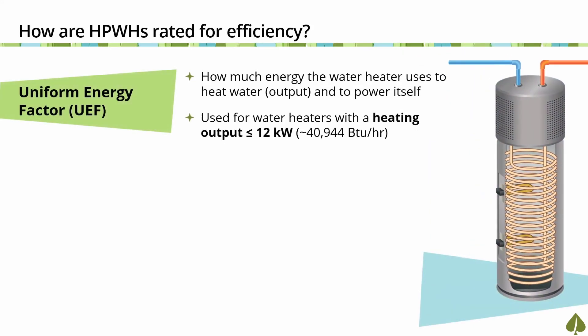There are two primary metrics for determining the energy efficiency of a heat pump water heater. The first metric is Uniform Energy Factor, or UEF. UEF is a measure of a water heater's energy efficiency and indicates how much energy the water heater uses to heat water, which is called the electrical output, and the energy to power itself. UEF is the metric used for water heaters with a heating output less than 12 kW, or less than 12,000 watts, roughly equivalent to 40,941 BTUs per hour. The higher the UEF, the more efficient the unit.